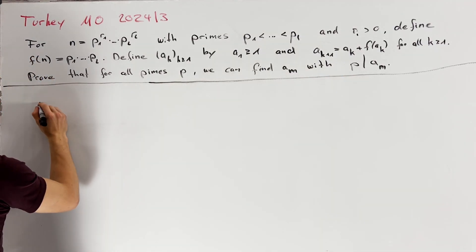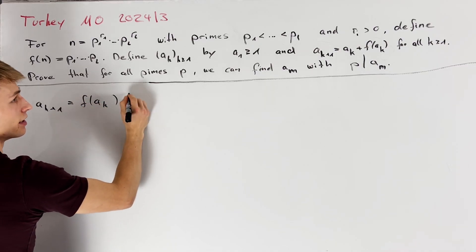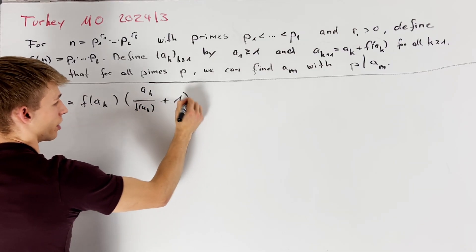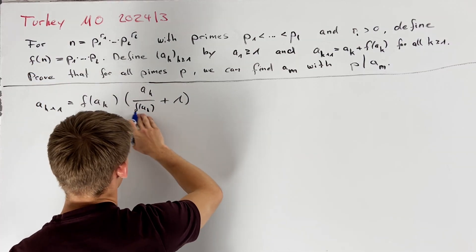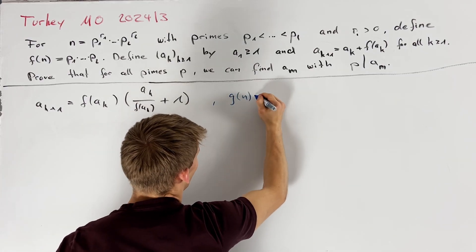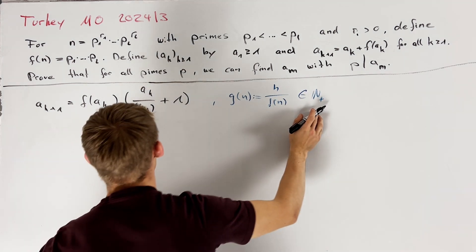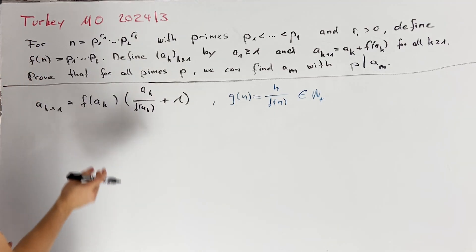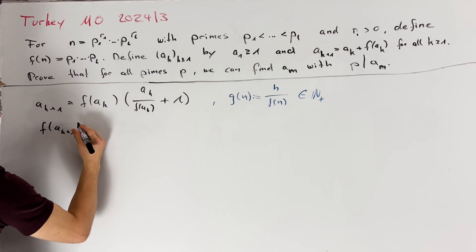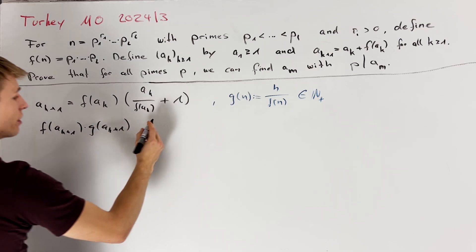So let's do this to get that a_{k+1} is equal to f of a_k times a_k divided by f of a_k plus 1. We want to give this fraction here a name and therefore let's define g of n as n divided by f of n and we know that this is a positive integer. This allows us to rewrite this equation in the following way. Namely on the left hand side we just have f of a_{k+1} times g of a_{k+1}.